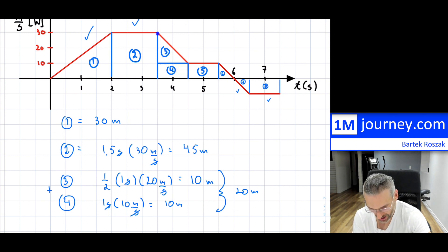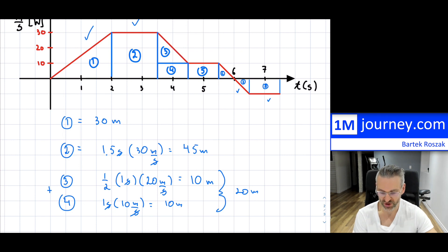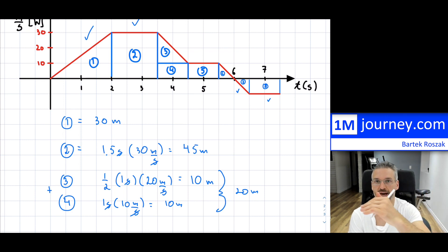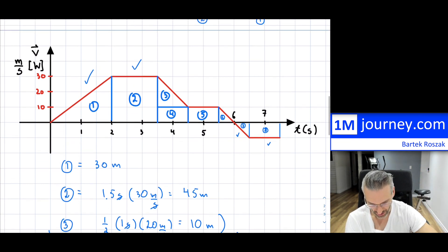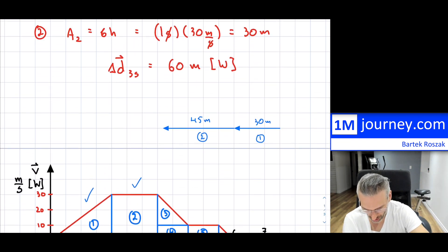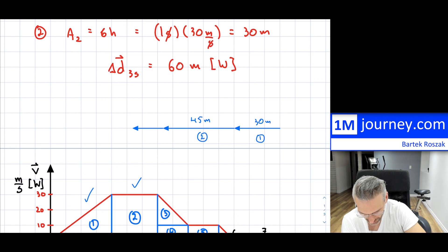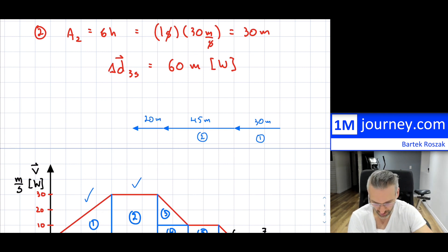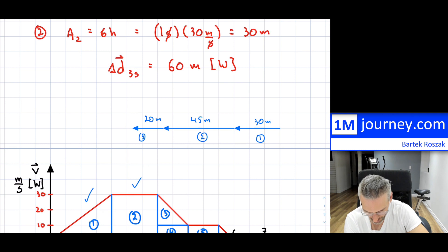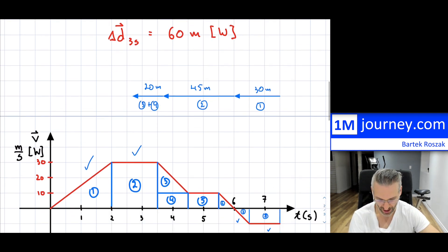Notice that during that distance, the speed is decreasing — we're slowing down. But we're still on the positive side, so we're still moving west. Think of a car slowing down but still moving — it has covered 20 meters.